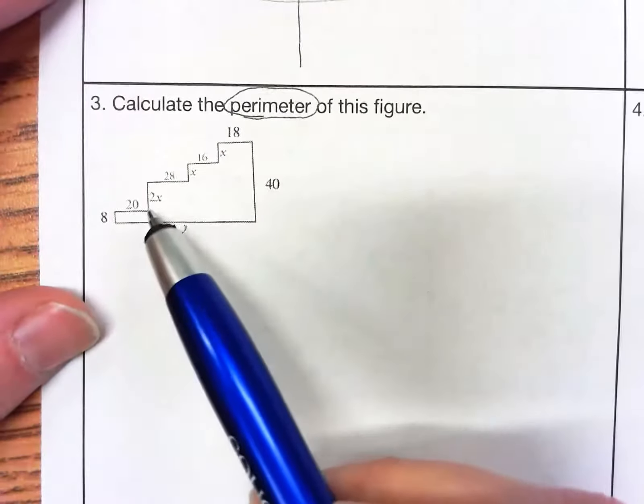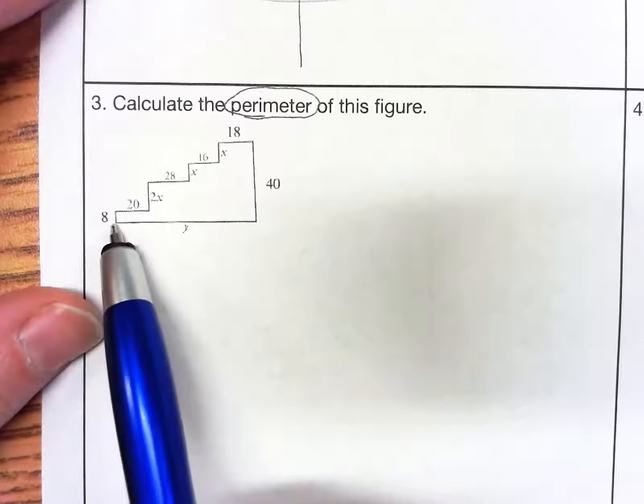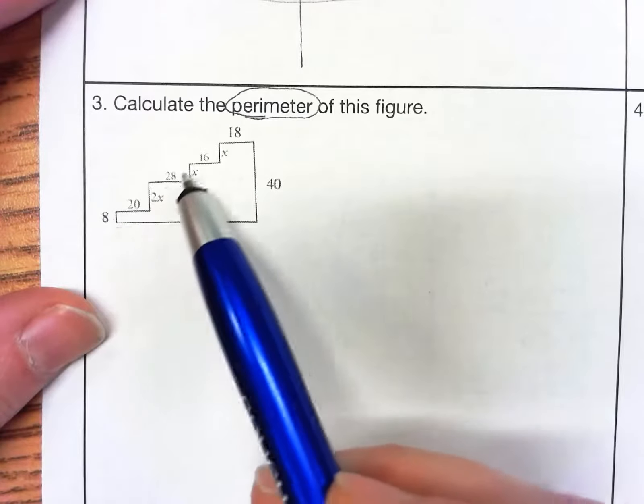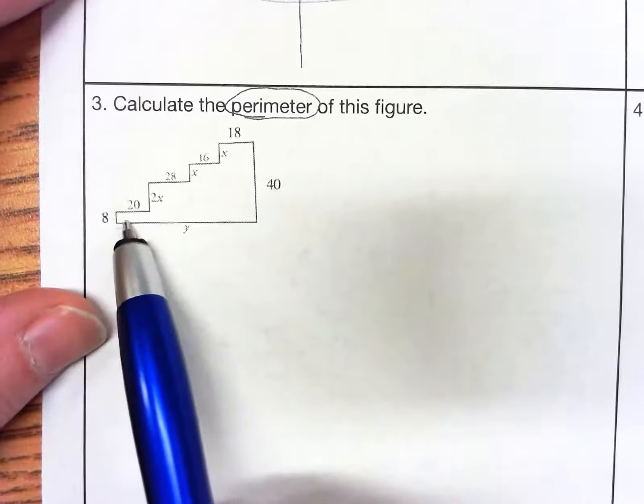So the first thing we need to do is figure out what are all the sides. We don't know what y is down here, and we also don't know what this little x value is. So let's try to find y first.